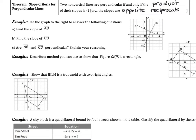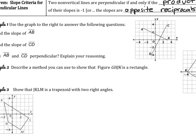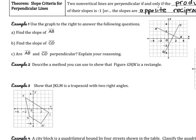Let's look at example 1: use the graph to answer the following questions. First, find the slope of AB. Using rise over run, going from A to B I'm going down 3 and then over 6, so it's negative 3 over 6, which is negative 1 half.